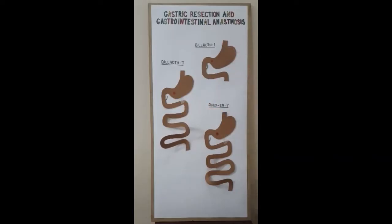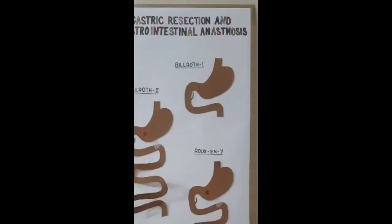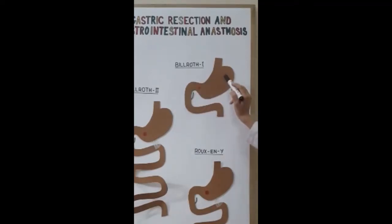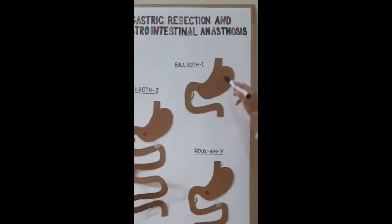Starting with the Billroth 1. Billroth 1 is basically a gastroduodenal anastomosis. It is done only in case of benign tumors in which we do not need a large margin of resection, or in cases like peptic ulcers.